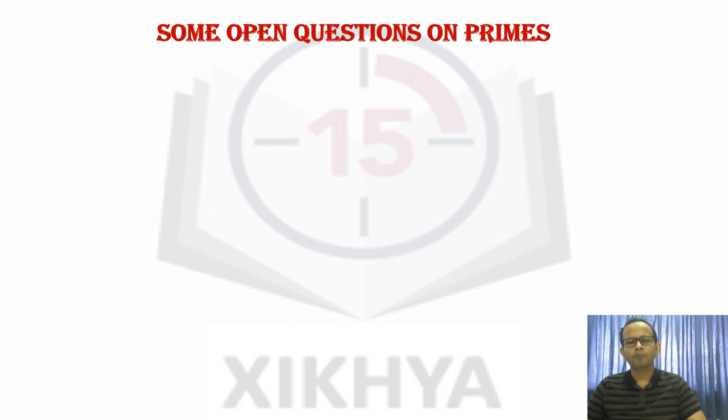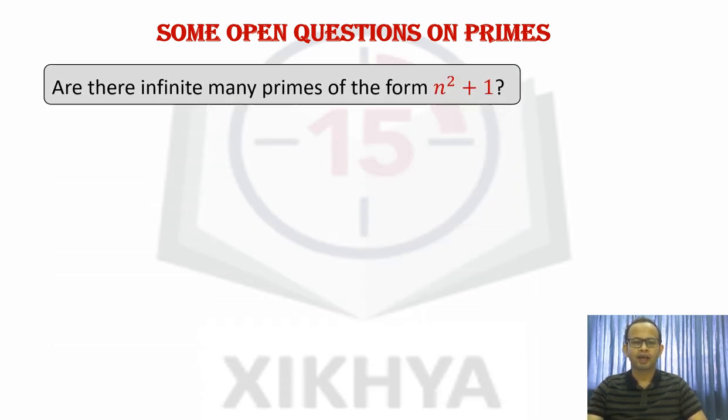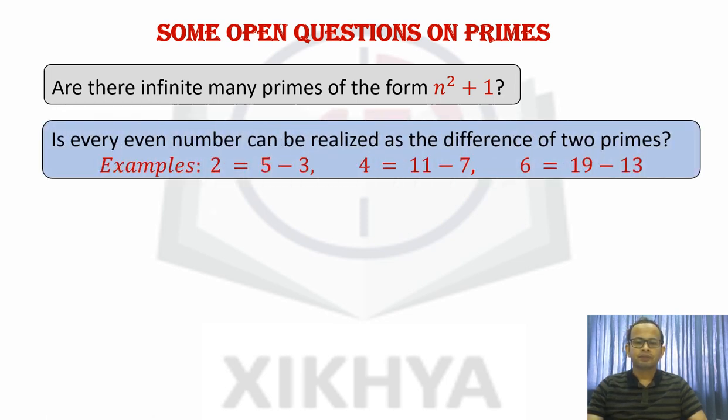There are so many open questions concerning primes. I will just briefly mention some of them. For example, whether there are infinitely many primes of the form n square plus 1. For example, 1 square plus 1 is a prime. 2 square plus 1, 5 is a prime. Similarly, 4 square plus 1, 17 that's a prime. So whether there are infinitely many such primes. Another question is whether every even number can be realized as the difference of 2 primes. For example, 2, you can realize as 5 minus 3, or let's take any larger number, 6, which is 19 minus 13. Can you do it for every even number?